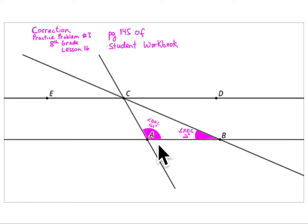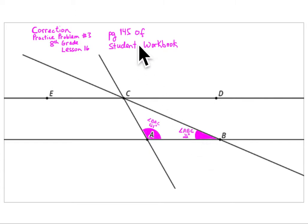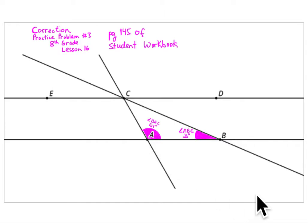So the correction is: angle ACE is 121 degrees and angle ACB is 22 degrees. On page 145 of the student workbook, you can make this correction or not — the thinking is the same, but I wanted it to look correct as well.